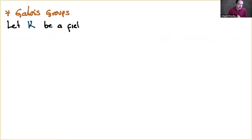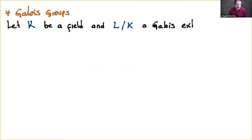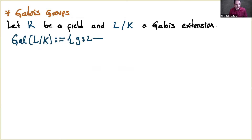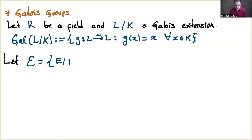Another source of examples is Galois groups. Let K be a field and L over K a Galois extension. The Galois group of L over K is the set of field automorphisms from L to L that act as the identity on the elements of K — the group of automorphisms of L over K.